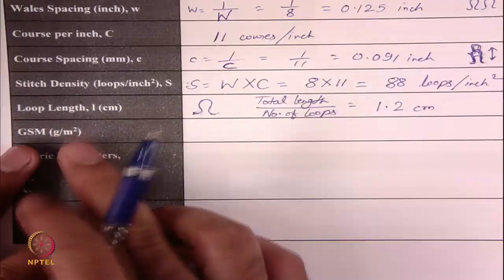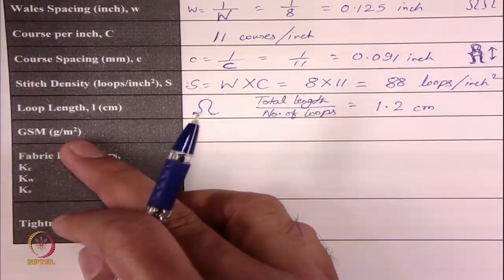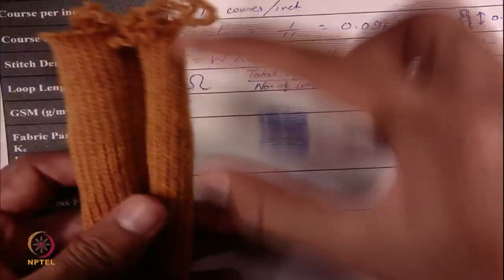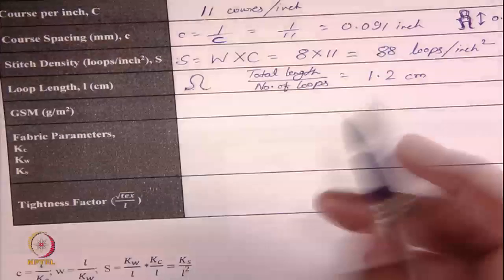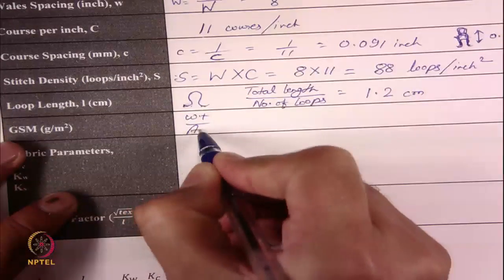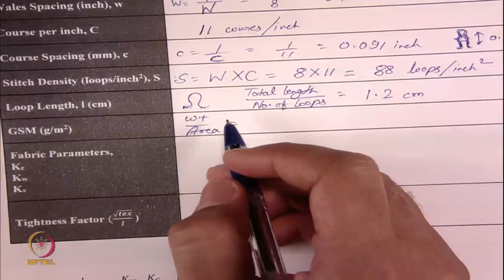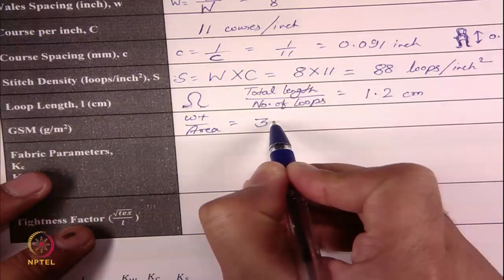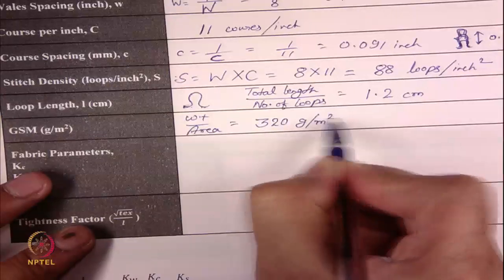GSM — fabric weight per meter square. You cut the fabric, measure the length, width, and weight, then GSM = weight divided by area in gram per meter square. We have calculated this as around 320 gram per meter square.